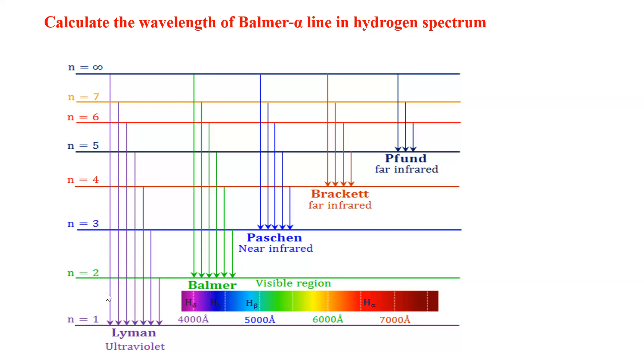For example, if electrons jump from higher orbitals like n equal to 2, 3, 4 and so on up to infinity to the first orbital n equal to 1, then it is the Lyman series. Here 2 to 1 is called Lyman alpha, 3 to 1 is Lyman beta, and from 4 to 1 is Lyman gamma and so forth.